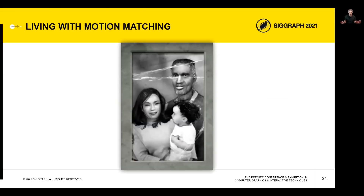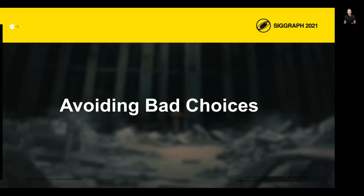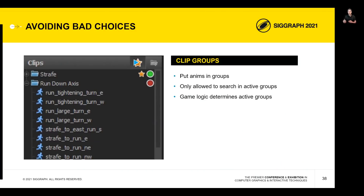Living with motion matching feels a bit like parenting — you're building a system that goes off and makes decisions for itself. You're constantly trying to teach it to make good decisions, but equally important, to not make bad decisions. Teaching it not to make bad decisions mostly comes down to limiting the available options. The first way we did this was breaking the dataset into groups that could be added and removed from the search at runtime based on game logic. For example, all animations for facing down the path were in their own clip group, and when we wanted characters to strafe, we wouldn't include those non-strafing animations in the motion matching search.